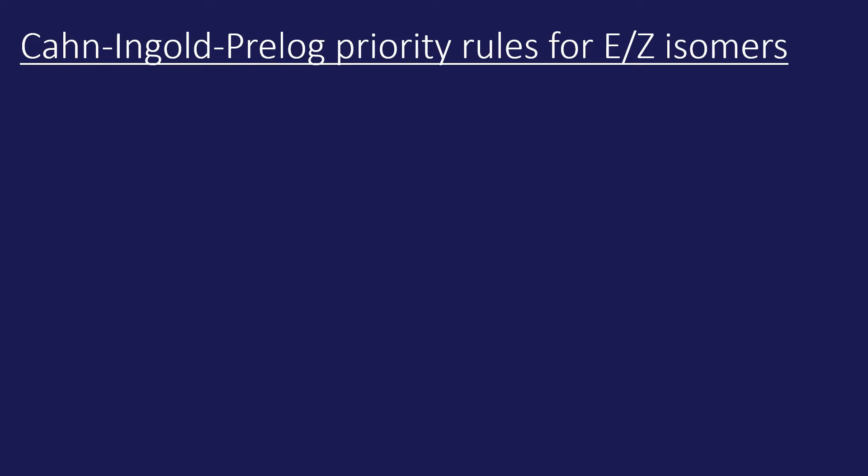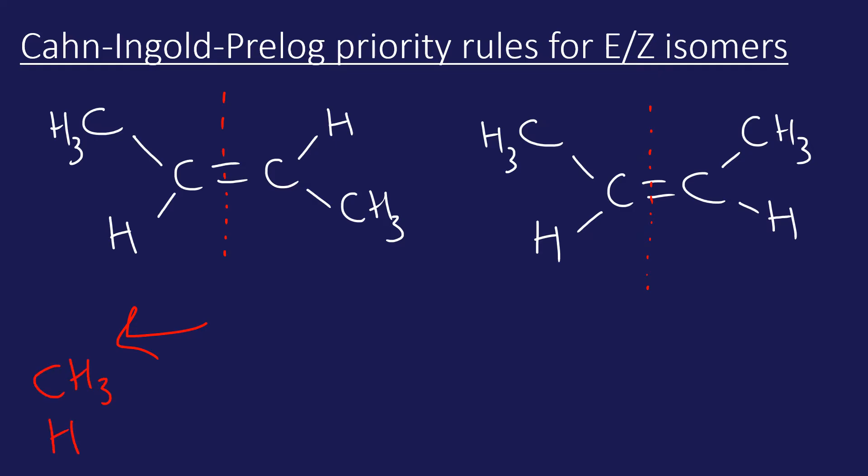We need to come up with a way of naming these isomers. We use the CIP rules, and you do need to be able to assign CIP rules. I'm just going to draw the two isomers out again. What we do is identify the double bond first. Let's identify the double bond and draw a line through it. Now I'm going to look at the left-hand side on both cases and assign a priority to one of the groups. We have two groups on the left-hand side: a CH3 and an H, and that's the same in both examples.